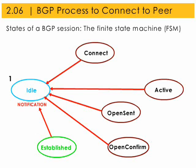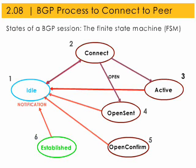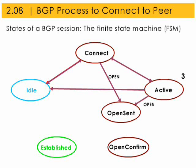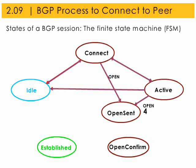In the idle state, no attempt is made to set up a TCP connection between neighbors, and the BGP neighbor refuses all incoming BGP connections. In the connect state, one BGP router attempts to establish a TCP connection with another BGP router, and BGP is waiting for the TCP session to be completed. The active state occurs when the TCP connection initiated by one BGP router fails, and BGP makes periodic retries to establish a connection. In the open sent state, the TCP connection has been successful and one BGP router is trying to identify itself to the other. BGP parameter negotiation occurs in this state, and depending on the message received, the BGP state transitions to idle, active, or open confirmed.